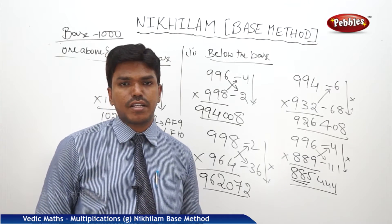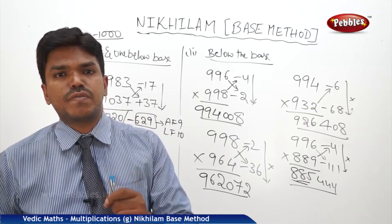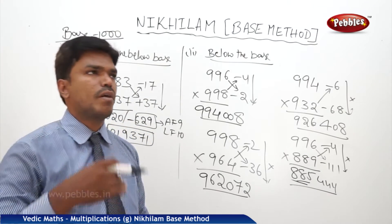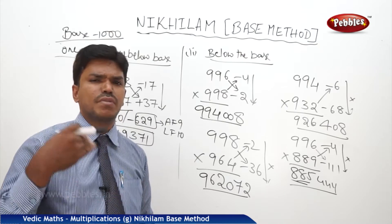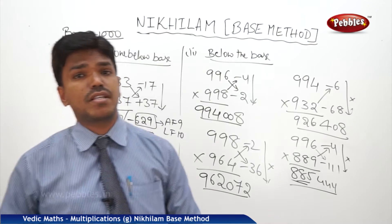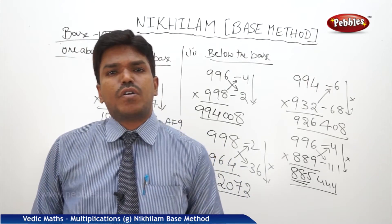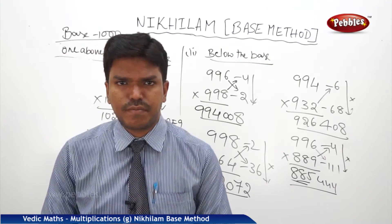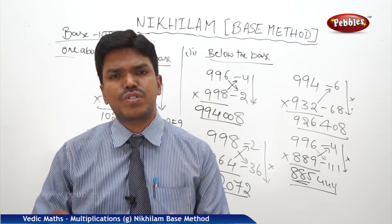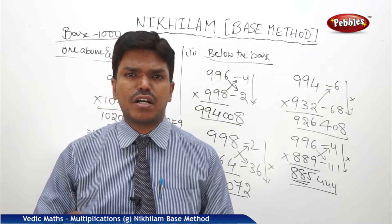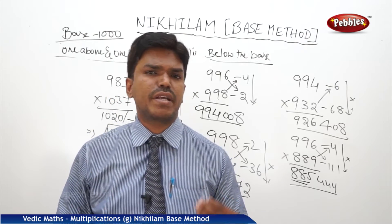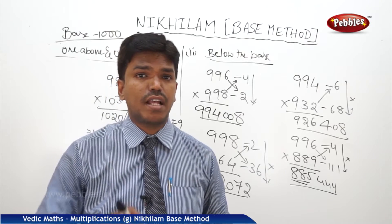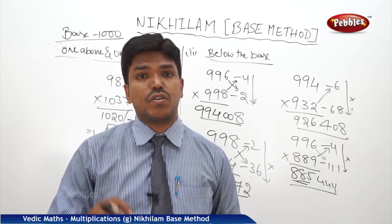Like this you can calculate numbers closer to base 1000 — whether one is above and one below, both above, or both below. Now we will see some random examples with any base — base 1000, 100, 10000 — whatever it may be, so that you can understand the concept clearly.